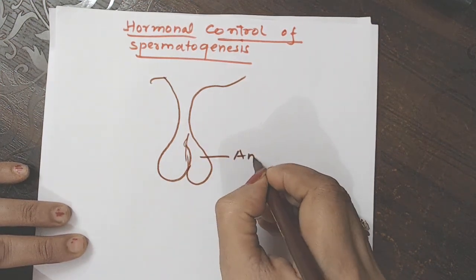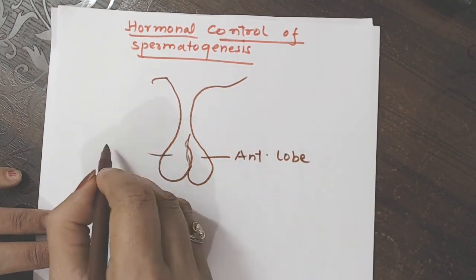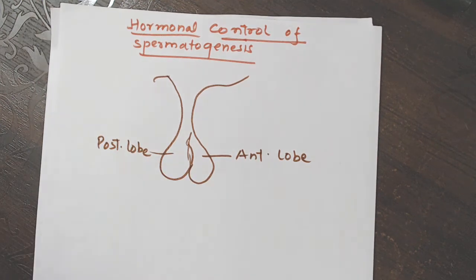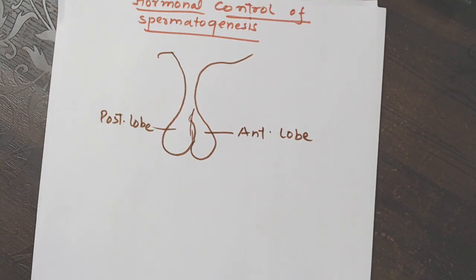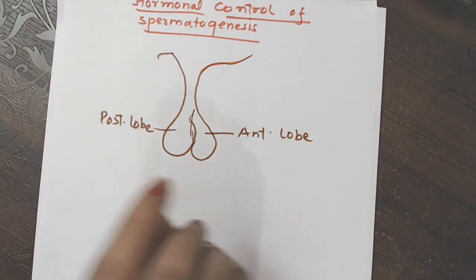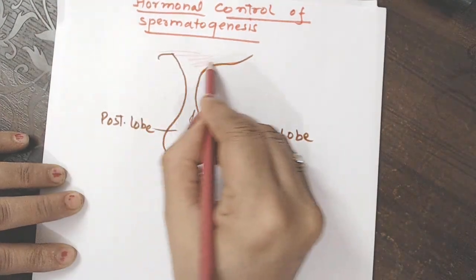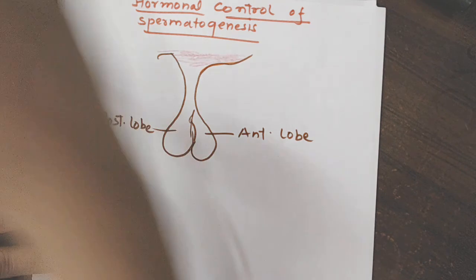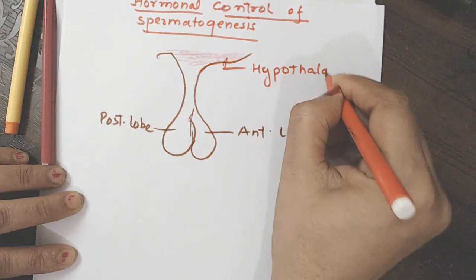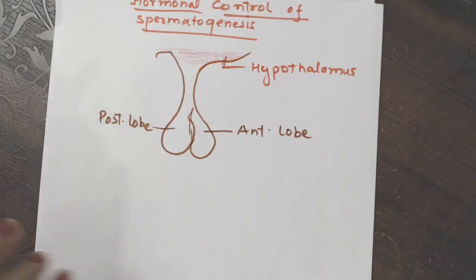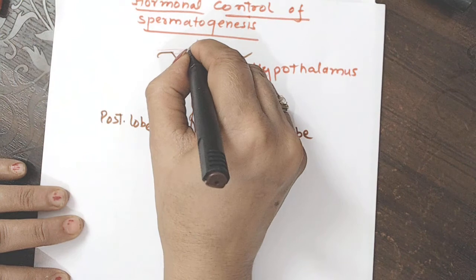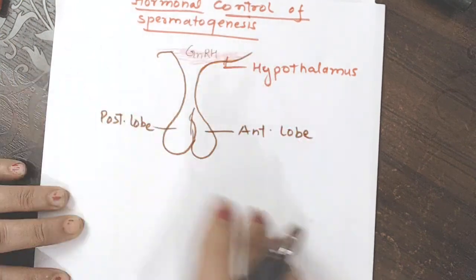but we will make the middle lobe here. Anterior lobe and posterior lobe. This is anterior lobe of pituitary and posterior lobe of pituitary. Okay bacho, so from this portion, this portion is hypothalamus portion.